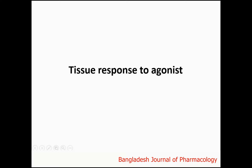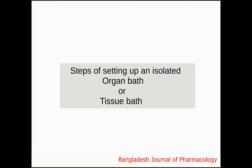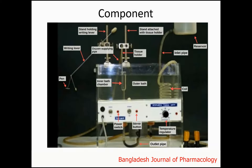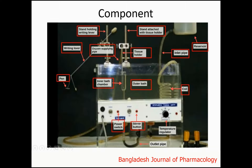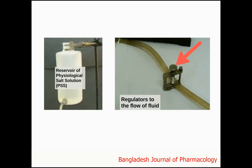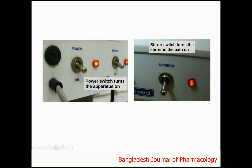The title of this class is the tissue response to agonist. First, we have to discuss the steps of setting up an isolated organ bath or tissue bath. The components are: inner bath chamber, outer bath, stand attached with tissue holder, tissue holder, oxygen supplying pipe, stand holding writing lever, writing lever, pen, reservoir, inlet pipe, coil, power switch, stirrer button, temperature regulator, outlet pipe, reservoir of physiological salt solution, and regulator to the flow of fluid.